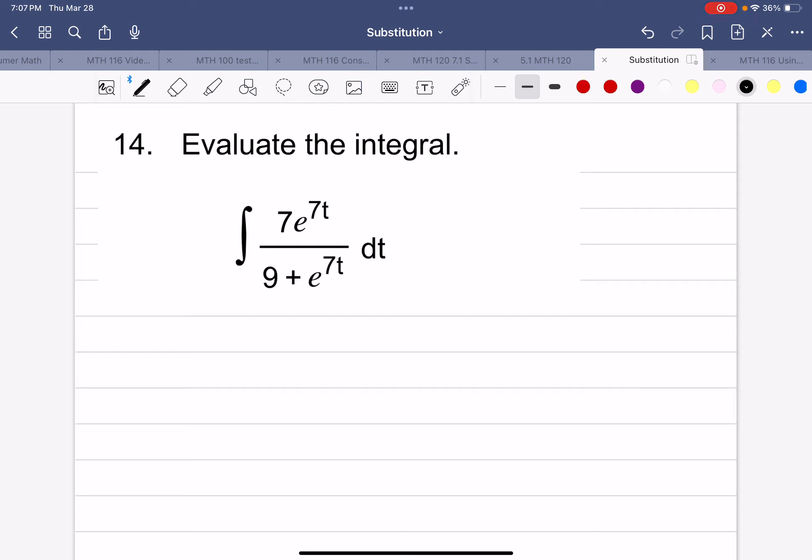The integral of 7e^(7t) divided by 9 plus e^(7t). So I'm not sure exactly which one should be u. I think it might need to be this whole thing. Let's see. If u is 9 plus e^(7t),